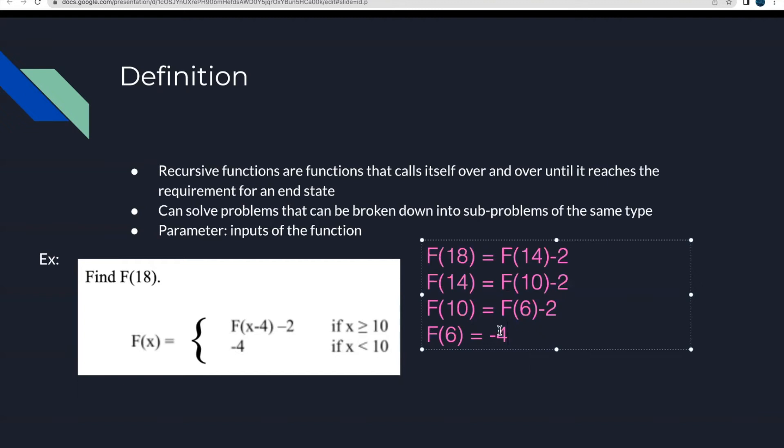And then you can kind of treat this like a variable. And you can replace everywhere you see, F of 10, and likewise here. And then everything's been solved. We have our value for F of 18. So this will be our answer, negative 10.